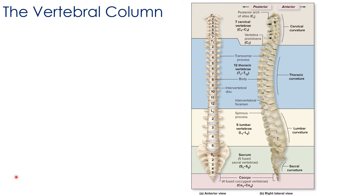We can divide the vertebral column into five distinct regions: seven cervical vertebrae, 12 thoracic vertebrae, five lumbar vertebrae, the sacrum, and the coccyx. The seven cervical vertebrae form the bones of the neck, with the first one articulating with the skull. The 12 thoracic vertebrae are in the superior region of the back, each articulating with one or two pairs of ribs. The lumbar vertebrae are in the lower back region, and below that, inferiorly, is where you find the sacrum and coccyx.